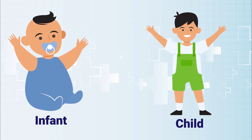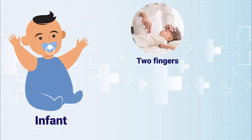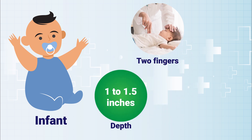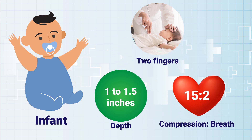Providing CPR in the case of children and infants can be complicated due to fragile bone structures, so you'll have to be more careful while performing it. For infants, place your two fingers on the breastbone, make sure not to press on the ribs, then begin compressions. Press down about 1 to 1.5 inches in infants at the same rate as adults, with 2 rescue breaths per 15 compressions.